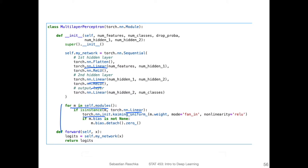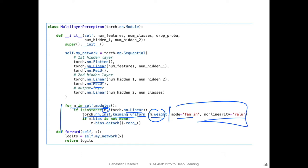I'm using torch.nn.init.kaiming_uniform and providing it with the corresponding weight for the linear layer M, setting it to fan_in and nonlinearity ReLU. By default it should be leaky ReLU, but fan_in is the default. I'm changing the nonlinearity to ReLU here. Personally, I don't notice any big difference.